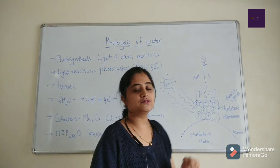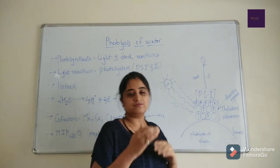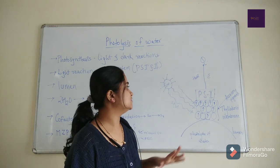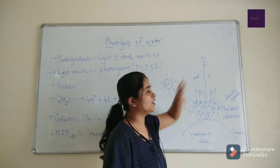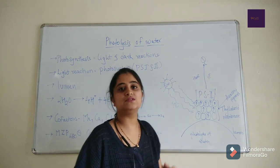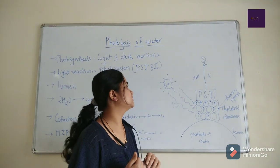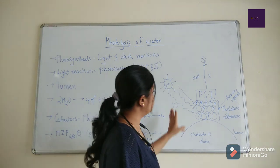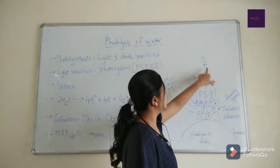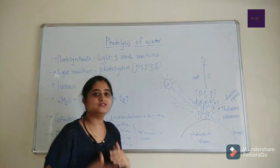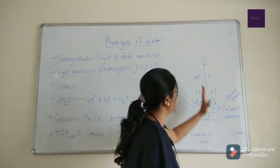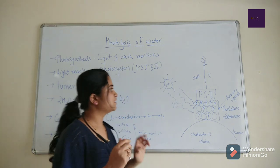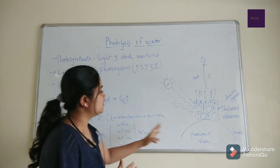It releases the heat and transfers the electron to the Q, that is pheophytin, that is a primary electron acceptor. It transfers the electron, and the high energy molecule is produced with the help of PS2, that is photosystem 2, and photosystem first.